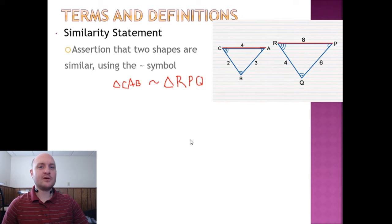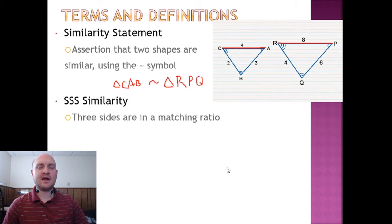So which congruence statements translate into similarity? Well, there are only a few of them, as it turns out. The first is SSS. If you can get all three sides matching in a ratio here, 4 to 8, 2 to 4, and 3 to 6, this qualifies as SSS similarity. So this example here is similar by SSS.